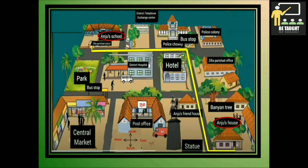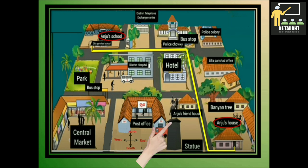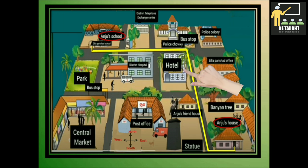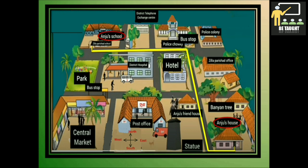On the way from Anju's house to the school, we can see the banyan tree, statue of Shivaji Maharaj, Anju's friend's house, hotel, district hospital, post office, central market, park, etc. So the route Anju passes along is a narrow lane and a main road on her way to school.